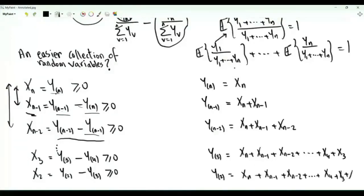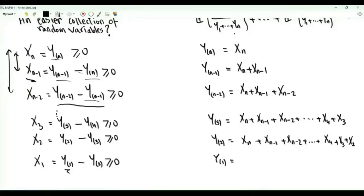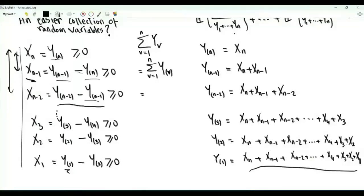Then x2 is y(2) in brackets minus y(3) in brackets, so y(2) equals y(3) plus x2. Finally, x1 is equal to y(1) in brackets — the maximum — minus y(2) in brackets, the second largest. Therefore, the maximum of the y random variables equals the sum of all x random variables. In the quantity of interest we have the sum of the y random variables, and we get the exact same value if we sum the ordered random variables. This sum in terms of the x random variables is: x1 appears once, x2 appears twice, x3 appears three times, and xn appears n times.